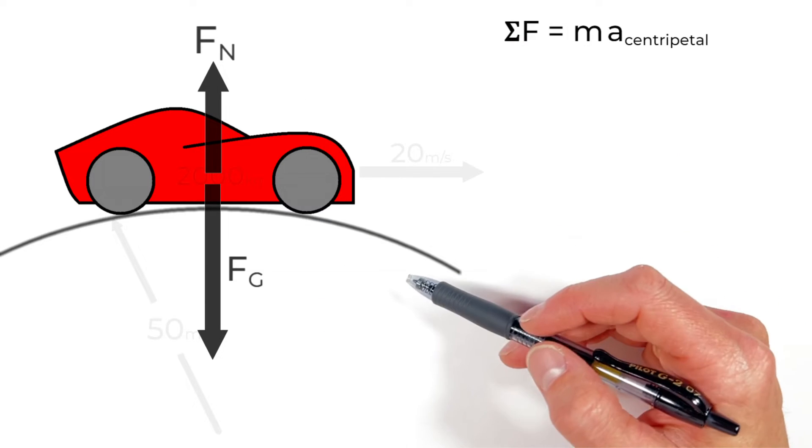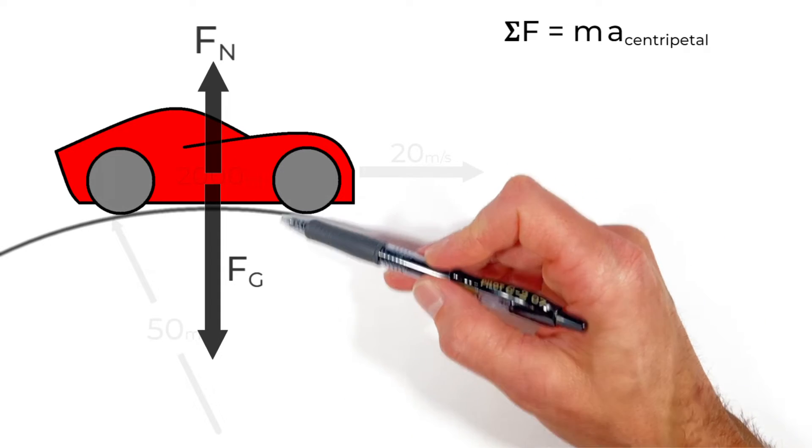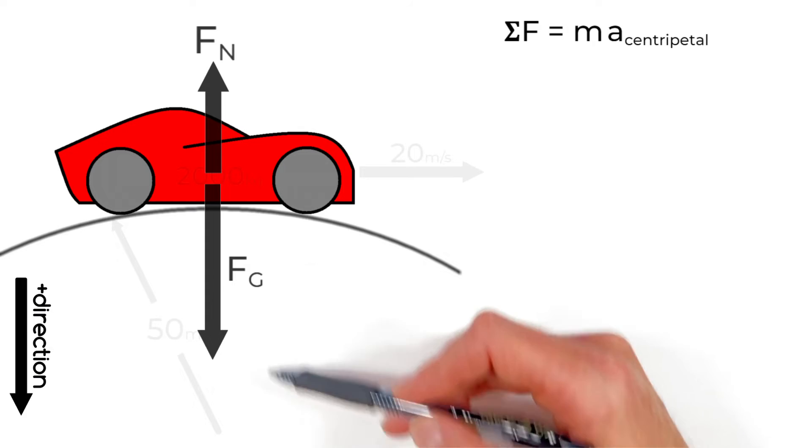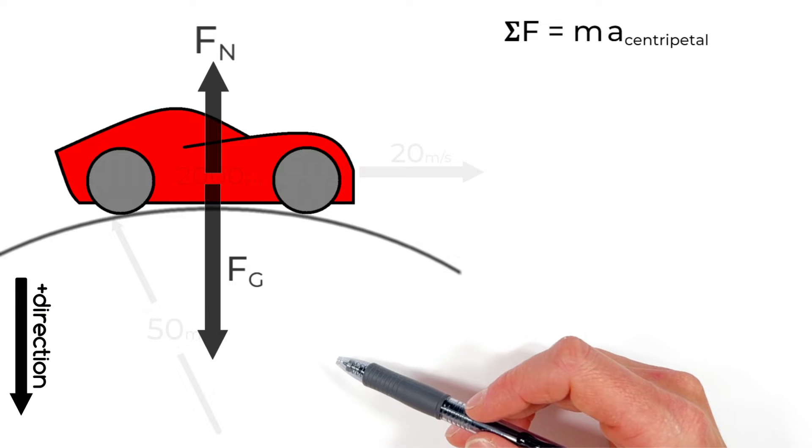I find it's easiest when dealing with competing forces like this in circular motion to say that inward toward the center of the circle is the positive direction meaning the force by gravity is in the positive direction and the normal force is in the negative direction.